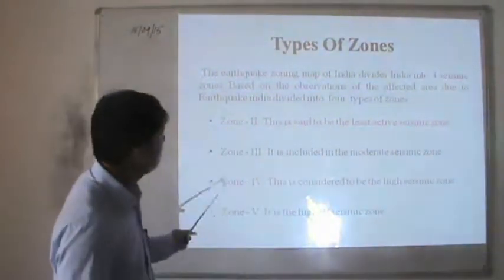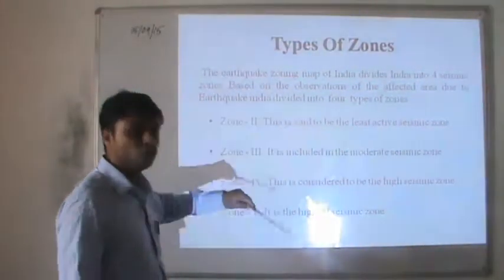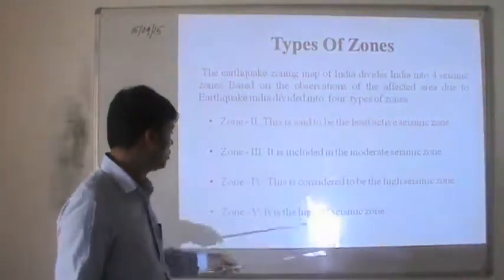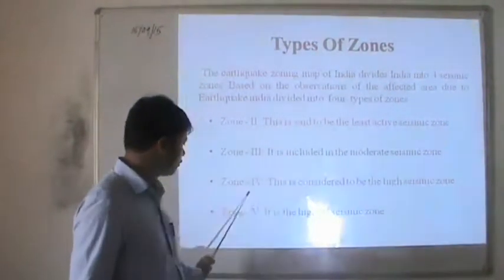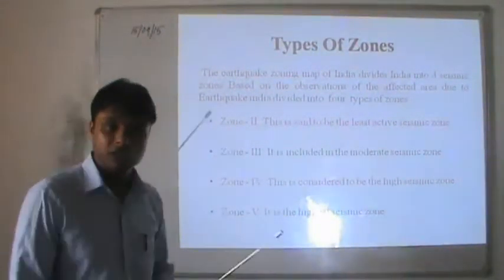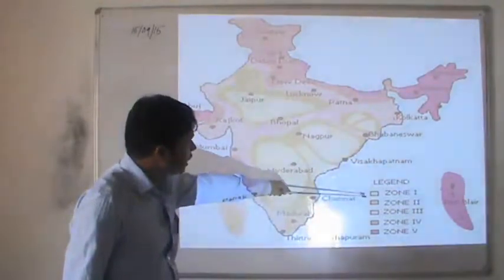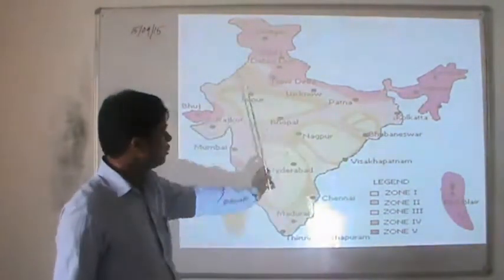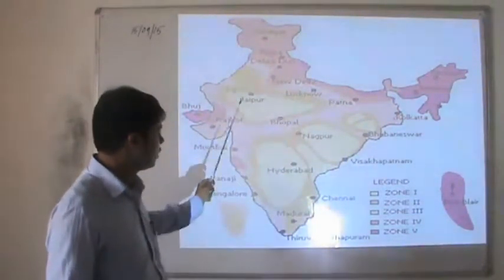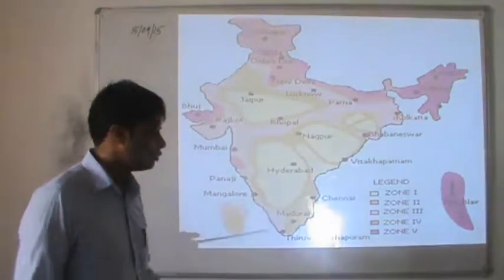As per Indian code standard, earthquake zones are divided as follows: Zone 1 has been merged into Zone 2, making Zone 2 the least active seismic zone. Zone 3 is a moderate seismic zone. Zone 4 is a high seismic zone, and Zone 5 is the highest seismic zone.